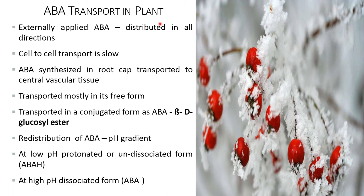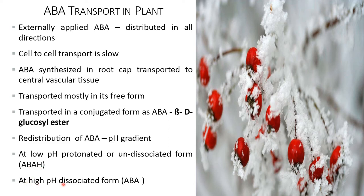Transport of abscisic acid in plants: externally applied abscisic acid is distributed in all directions; cell-to-cell transport is slow. Abscisic acid synthesized in the root cap is transported to the central vascular tissue, mostly in its free form. Its conjugated form is abscisic acid beta-D-glucosyl ester. Redistribution of abscisic acid mainly depends on pH gradient. At low pH, the protonated or undissociated form (ABAH) is formed; at high pH, the dissociated form (ABA⁻) is present.